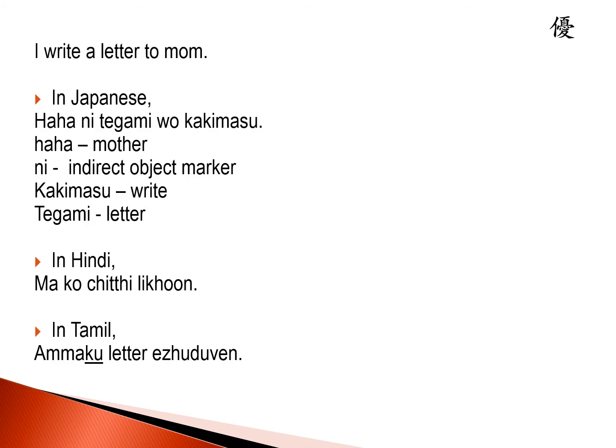Now let's see how the sentence will work in Japanese, Hindi and Tamil. In Japanese you would say 'haha ni tegami wo kakimasu'. Haha here is mother, ni is the indirect object marker, and kakimasu is to write. Tegami wo kakimasu by itself means write a letter. To whom are you writing the letter? To mother, or haha. So you say haha ni tegami wo kakimasu and you end the sentence with the verb. In Hindi you would say 'ma ko chitti likhun', and in Tamil you would say 'ammaku letter ezhuduppaen'.